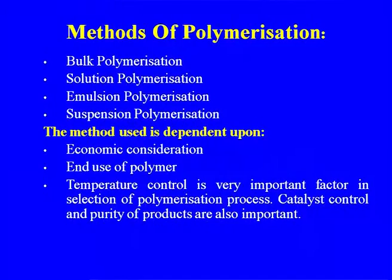What are the methods of polymerization? These methods are used for all three categories of polymers — plastic, synthetic fiber, and elastomer: bulk polymerization, solution polymerization, emulsion polymerization, and suspension polymerization. These four major types of polymerization process are used, and the choice of method depends on economic considerations, end use of the polymer, temperature control — which is a very important factor — catalyst control, and purity of the product.